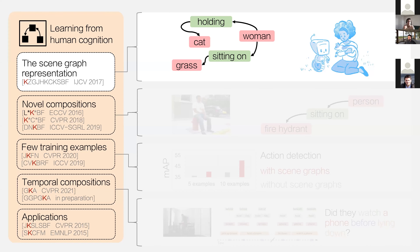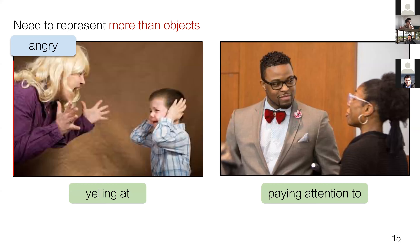To contextualize why object representations are insufficient for downstream tasks, consider two images. If you take away the pixels, object features would tell you both images contain two people and their locations, making them seem semantically similar. But knowing only object information is often not enough—these two images with the same object representations can have very different interpretations: in the first, one person is angrily yelling at another; in the second, a person is paying attention to someone. When we use object representations for downstream tasks, it's no wonder models struggle to generalize.